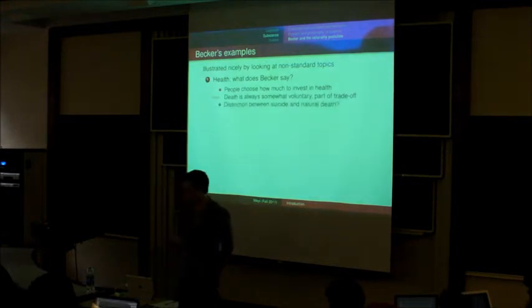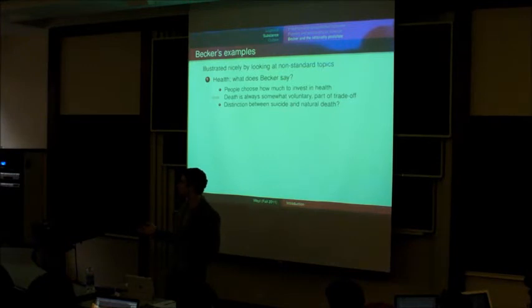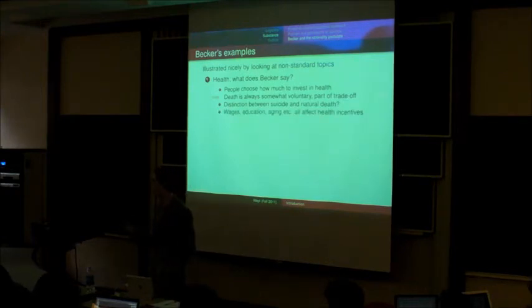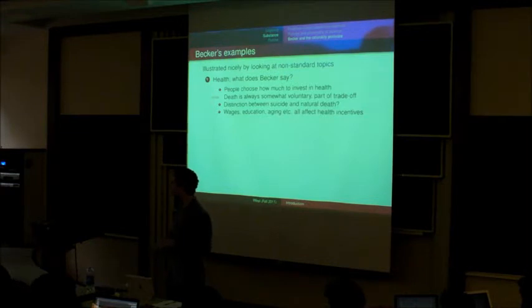Yeah, so he argues that basically every death is in some sense voluntary because we make choices between death and money all the time, even if it's only a small chance of death, or between death and having some exciting experience. And so the distinction between natural death and suicide is a bit odd. And, in fact, we can predict the types of choices that people make along some of these dimensions depending on what their wages are, depending on what their education is, and so forth. Purely economic factors will influence how much risky behavior people take with their lives.